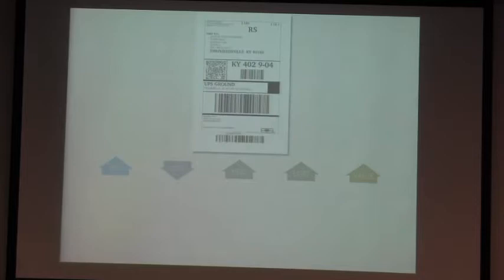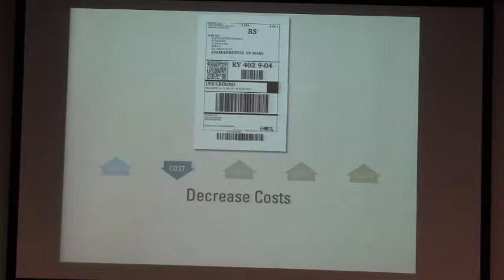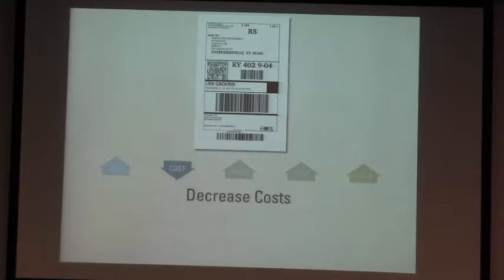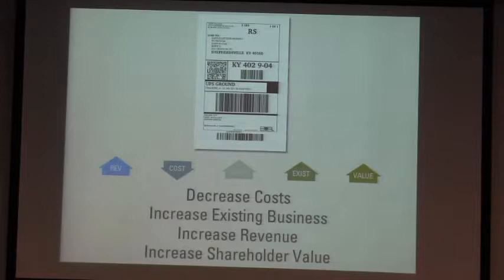How about that shipping label? It decreases cost because it's clear how to use it. Plus, Zappos negotiates bulk deals with UPS, and in their bulk deals for all the packages with free shipping, they get to include all the packages coming back, which increases volume, and UPS gives them an even bigger discount. The other thing is that customers have said because they provide this label so easily, they buy more product. So they get an increase in existing business, an increase in revenue, and both of those things have translated into a massive increase in shareholder value — so much so that Amazon bought them primarily because of this.